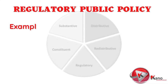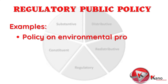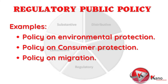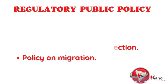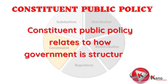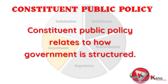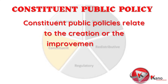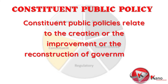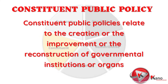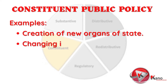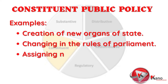Examples of regulatory public policies include policy on environmental protection, policy on consumer protection, and policy on migration. The next type is constituent public policy. These are public policies that relate to how government is structured — essentially relating to the creation, improvement, or reconstruction of governmental institutions or organs, including assigning or reassigning powers and authority to such institutions. Examples include the creation of new organs of state, changes in the rules of parliament, and assigning new powers to a state organ.